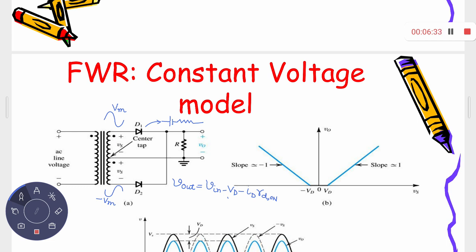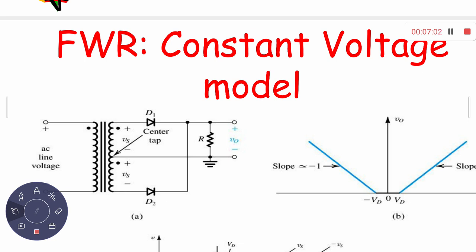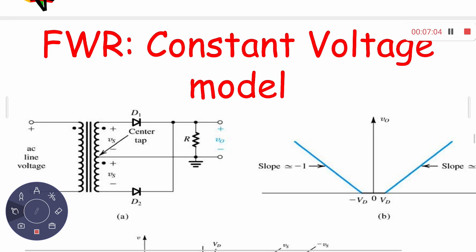The output is positive in both the positive and negative half cycles. In the positive half cycle, both input and output are positive, so the slope is +1. In the negative half cycle, the input is negative but the output is positive, so the slope is −1.